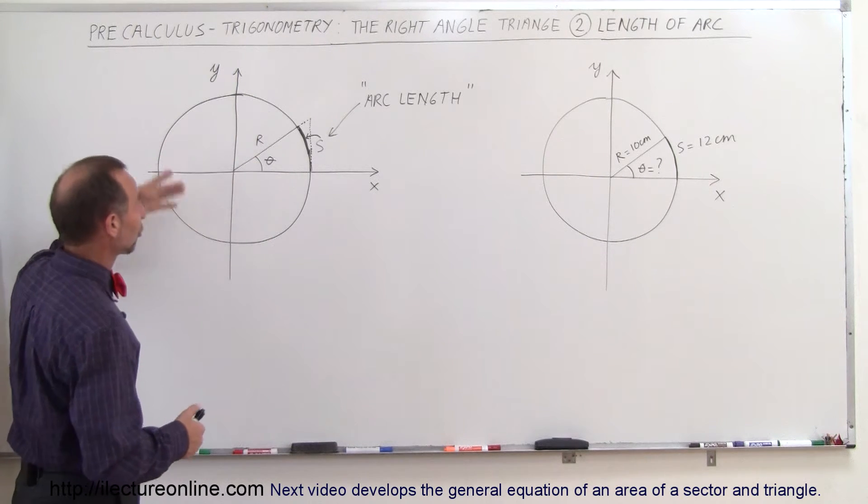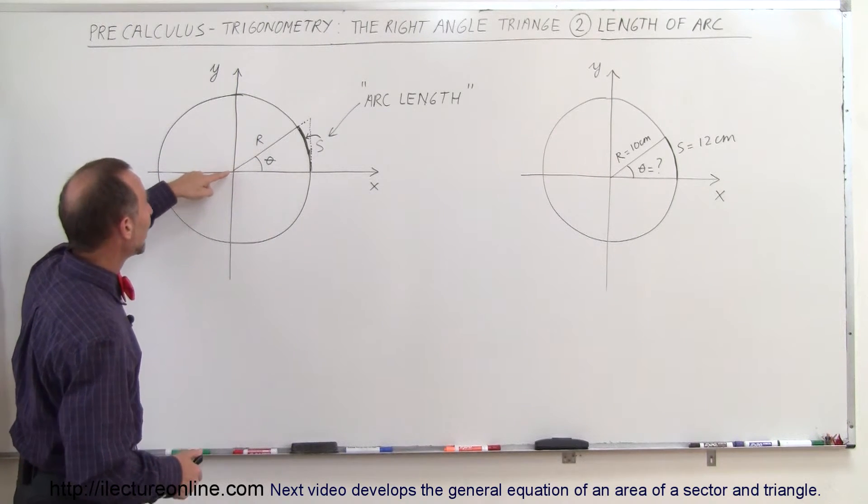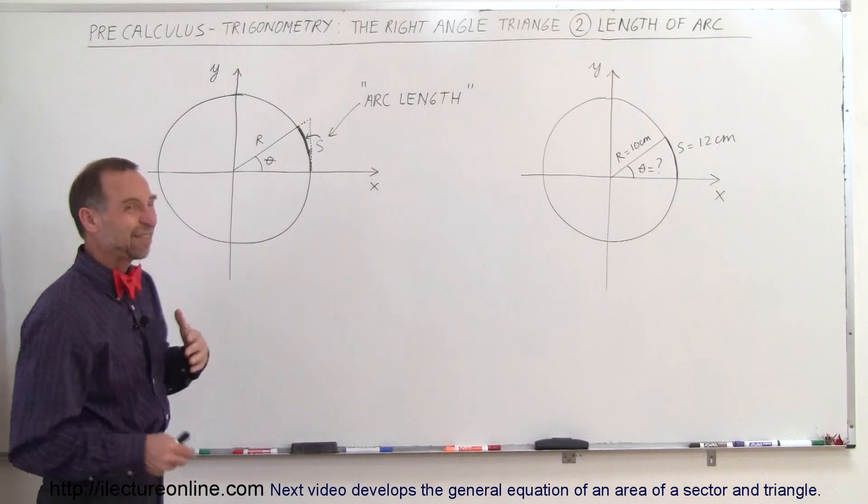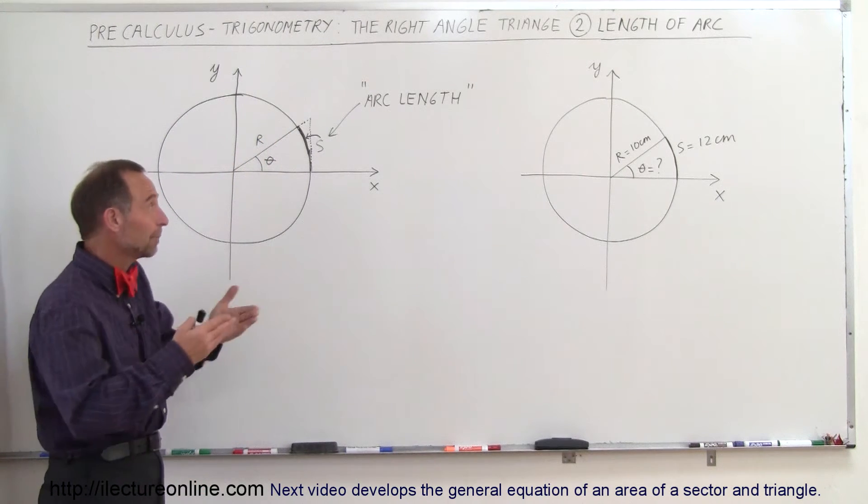Here you can see a unit circle, perhaps, and the radius of the unit circle is R. Well, it doesn't have to be a unit circle. R can be other than one. R can be any value.